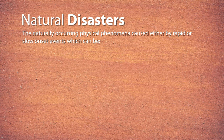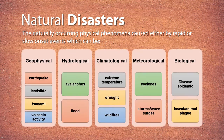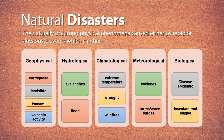Natural disasters have been classified into five categories: geophysical, hydrological, climatological, meteorological, and biological. When we talk about geophysical natural disasters, events like earthquakes, landslides, tsunamis, and volcanic activities all come under geophysical activity.